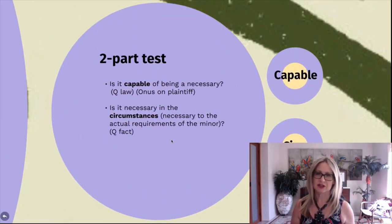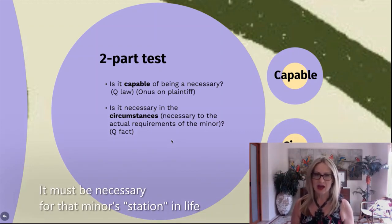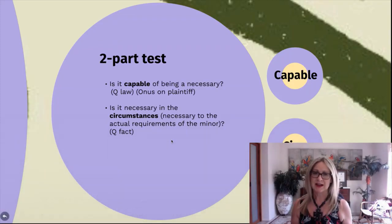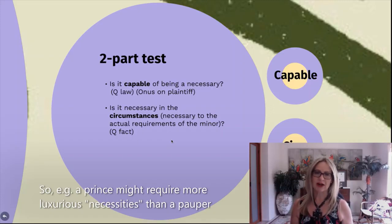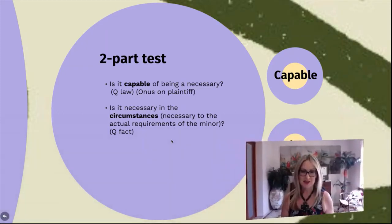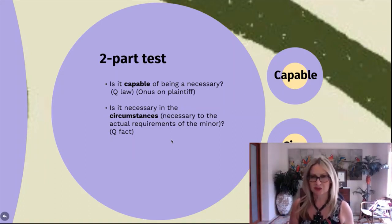The test you need to get your heads around is a two-part test. The first part is a question of law: is this thing — the goods or services the minor wishes to purchase — capable of being a necessary? Is it beneficial and necessary for that minor's person? The plaintiff who wants to uphold the contract bears the burden of proof on this, and it is a question the judge decides. For the second part, you must show that in these particular circumstances, for this particular minor, these goods or services are actually required — and that is a question of fact that goes to the jury.